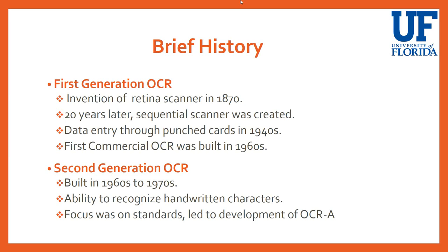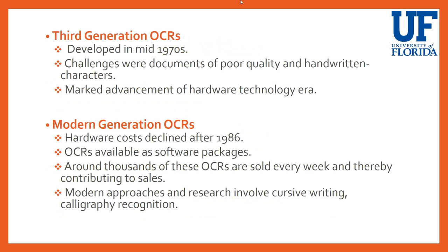Third generation OCRs were developed in the 1970s. The objective was to obtain high performance at low cost, even with poor quality documents and handwritten characters. They were also forerunners of hardware technologies. Improvements in printer spacing and small font sizes made OCRs more convenient. Rough drafts were created on typewriters, fed to OCR machines, and then used for editing purposes by computers.